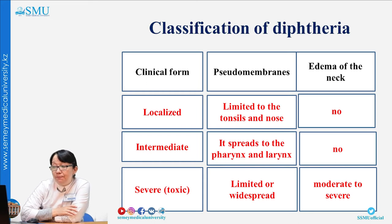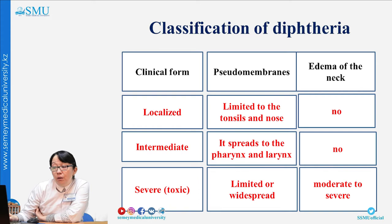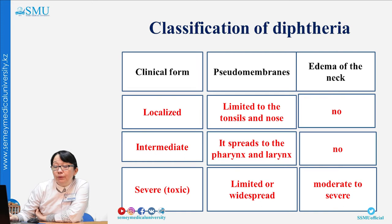Classification of diphtheria has three main clinical forms: localized, intermediate, and severe/toxic. In the localized form, pseudomembranes are limited only to the tonsils and nose without edema of the neck. In the intermediate form, pseudomembranes spread to the pharynx and uvula but without edema of the neck. In the severe or toxic form, pseudomembranes are limited or widespread and there is edema of the neck from moderate to severe.